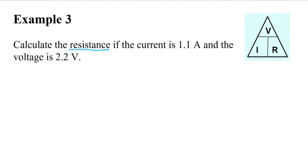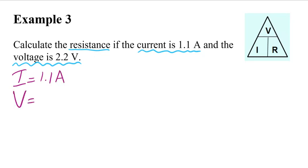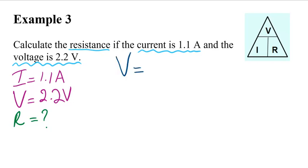In this example, we have to calculate the resistance. The current is given to us and the voltage is also given. Step one: write down what's given to us — current is 1.1 amps and voltage is 2.2 volts. Step two: write down what we need to solve for, which is resistance. Step three: write down the formula, which is V equals I times R.